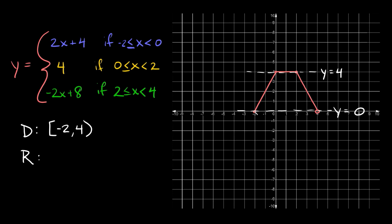As you can see, we do have a closed circle at the bottom, so we can include zero. And we do have some closed circles up here too, so we're going to include four. That means we're going to use brackets on both ends. The range goes from zero to four, and they both get brackets.